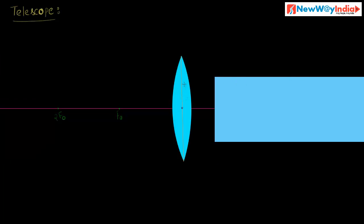How is it constructed? It is having two metallic tubes — one bigger metallic tube and one smaller metallic tube. The bigger metallic tube consists of a convex lens having larger focal length. It is mounted in the bigger tube, so it is called the objective lens. A convex lens having larger focal length is called the objective lens in a telescope.